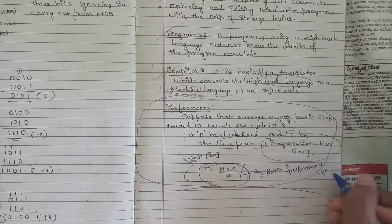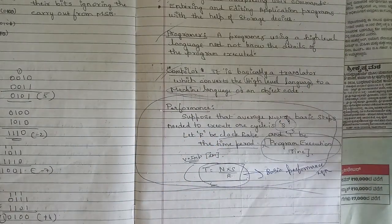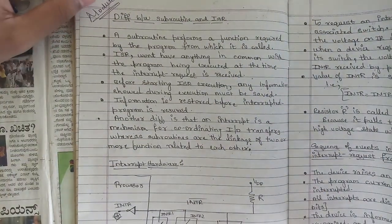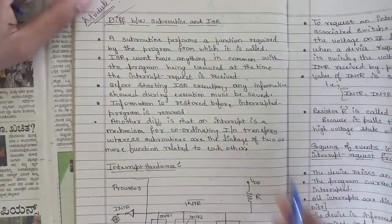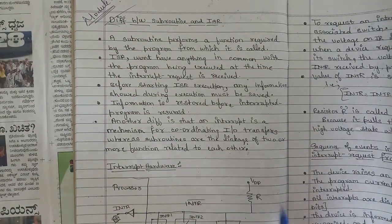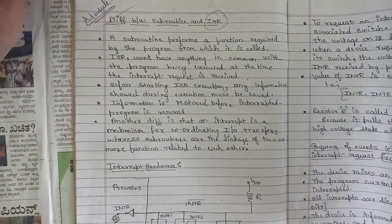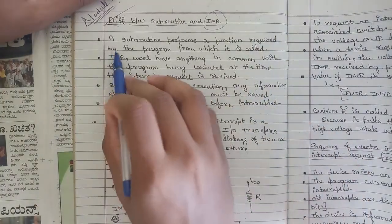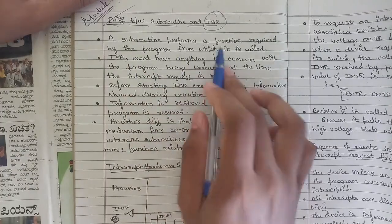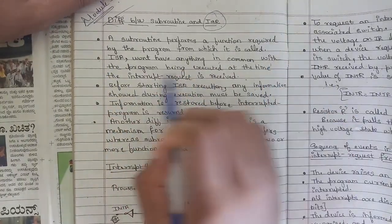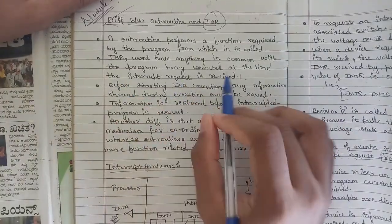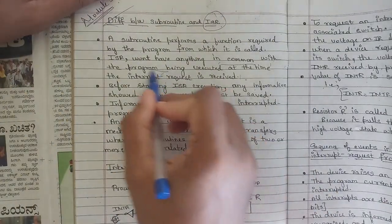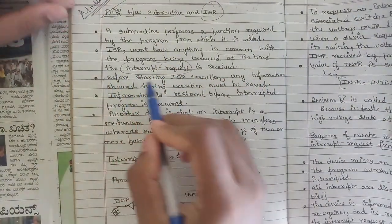The basic performance equation is very important — one question related to it will be asked. From module 3, one fixed question is the difference between a subroutine and an ISR (Interrupt Service Routine). A subroutine performs functions required by the program for which it is called. An ISR has nothing in common with the program being executed at the time the interrupt request is received.